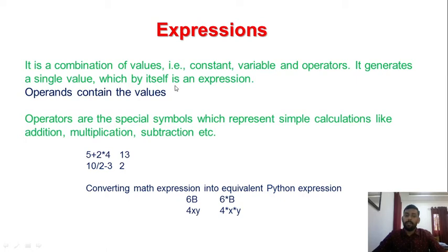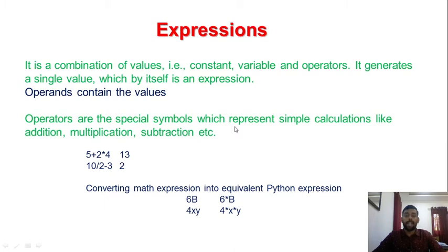Operands contain the values upon which the operation is performed. For example, if a = 4 and b = 5, then a + b evaluates as 4 + 5. Operators are special symbols that specify which computation to perform, such as addition, multiplication, subtraction, division, or modulus.